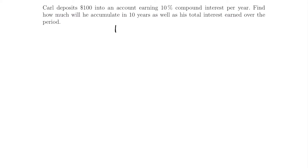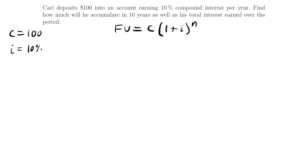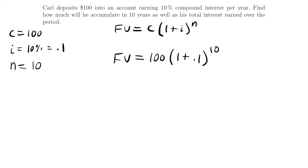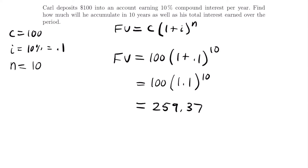Let's write our equation: future value equals the initial deposit times one plus the interest rate to the number of years. We have an initial deposit C of $100, an interest rate of 10% or 0.1 in decimal format, and a number of periods N of 10 years. Plugging into the equation: future value equals 100 times 1 plus 0.1 to the 10th power, which simplifies to 100 times 1.1 to the 10th power. Our answer is $259.37 — that's how much is in the account at the end of 10 years.